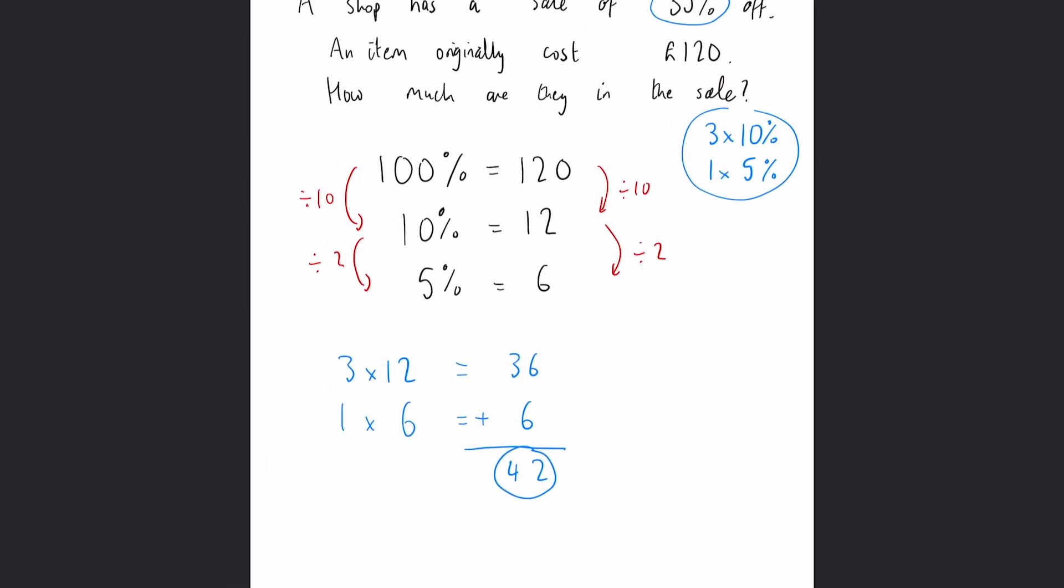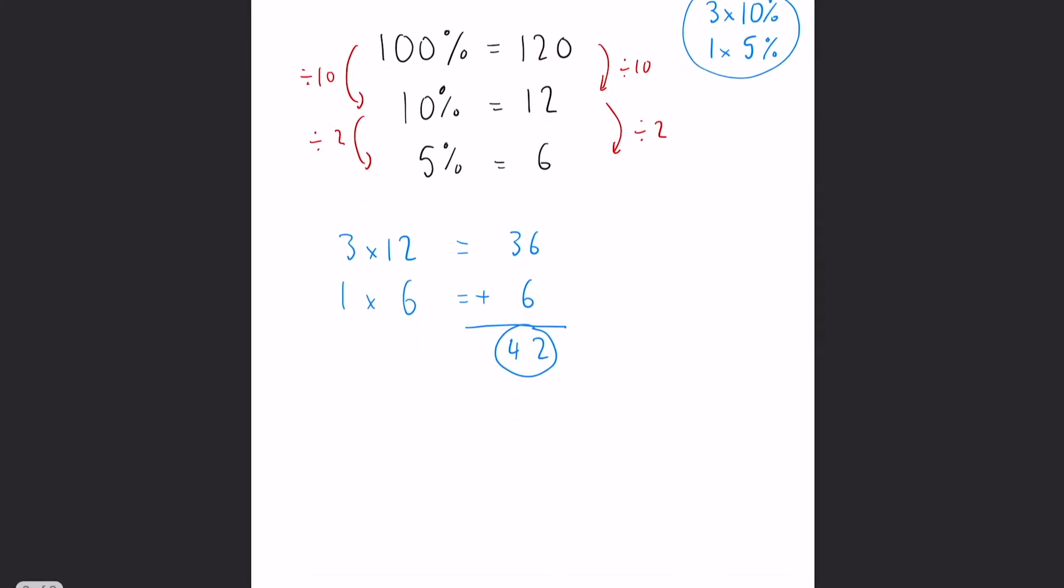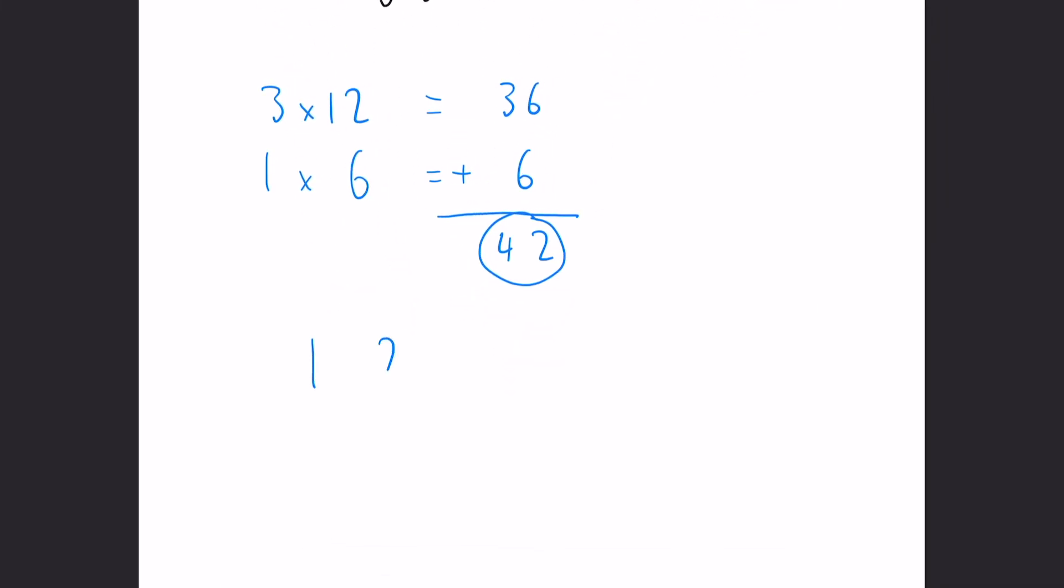Now that is 42 pounds off of the original 120, so we can do 120 take away 42, and that is going to be 78 pounds. Thank you for watching and I hope that helped.